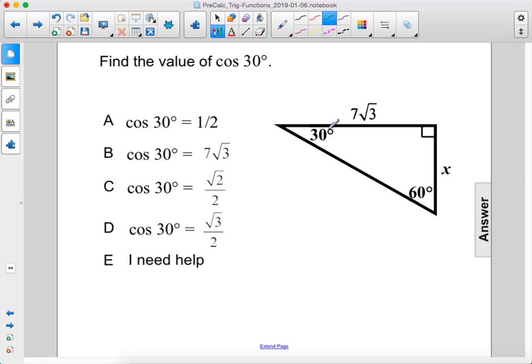Find the value of cosine 30 degrees. So this is the angle we're looking at. Cosine is adjacent over hypotenuse.